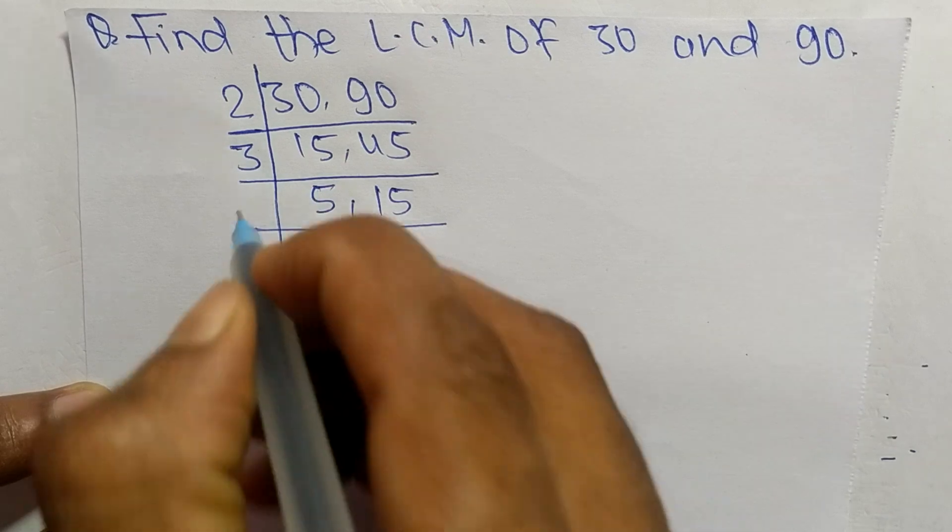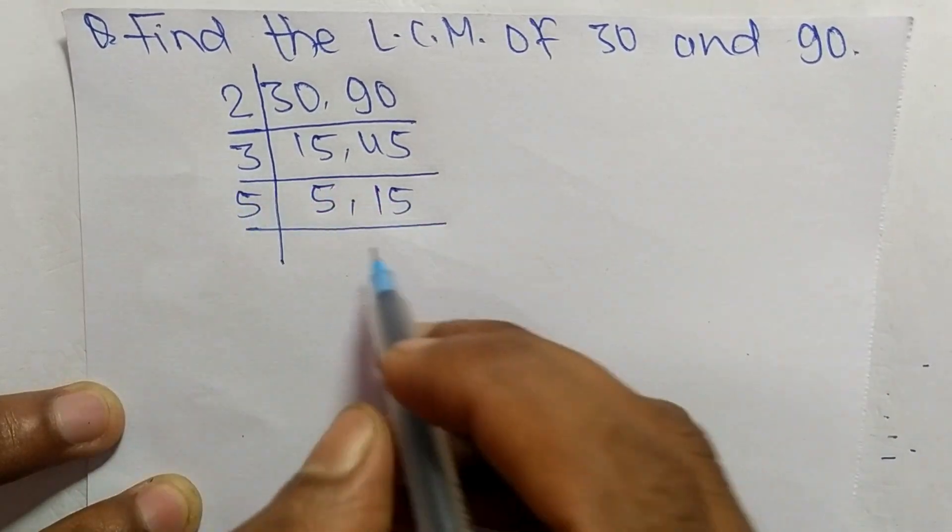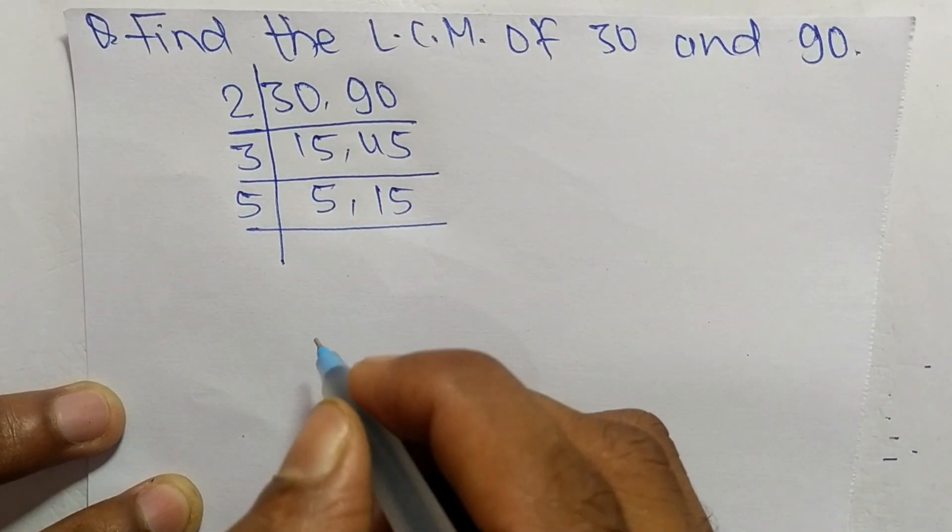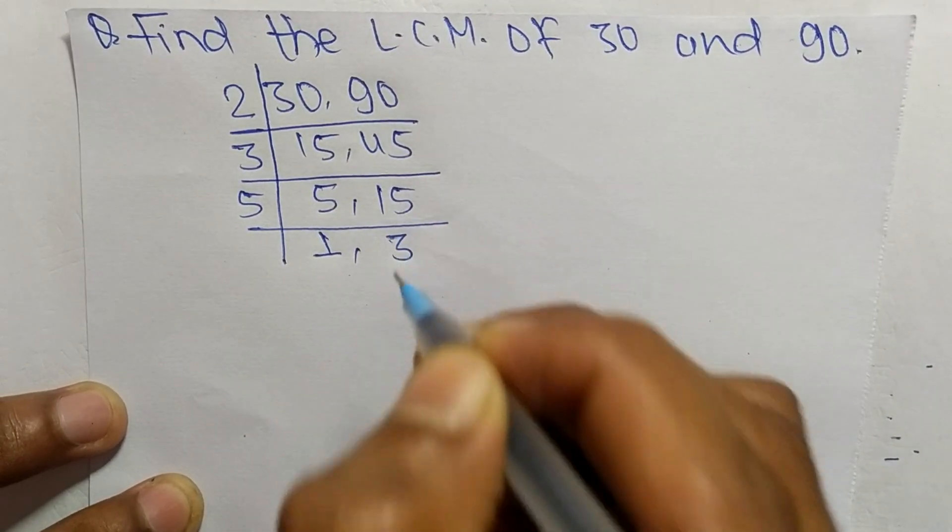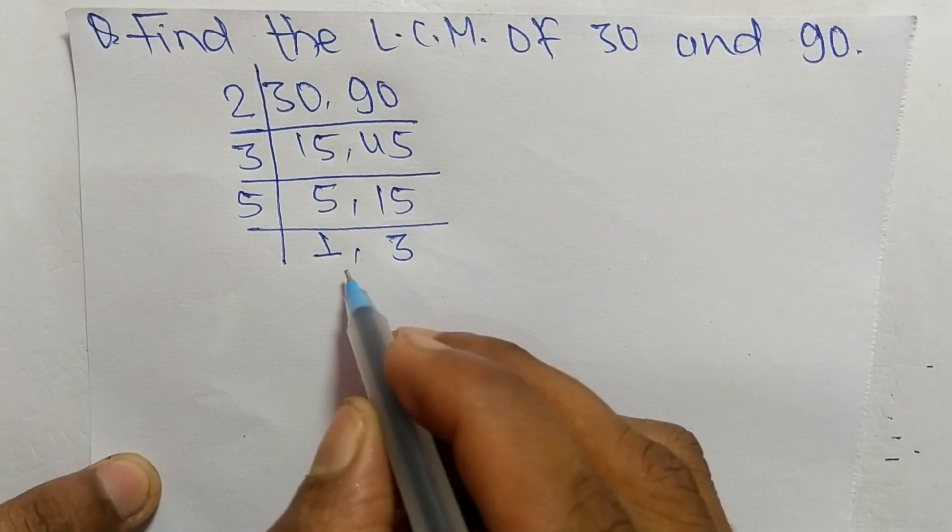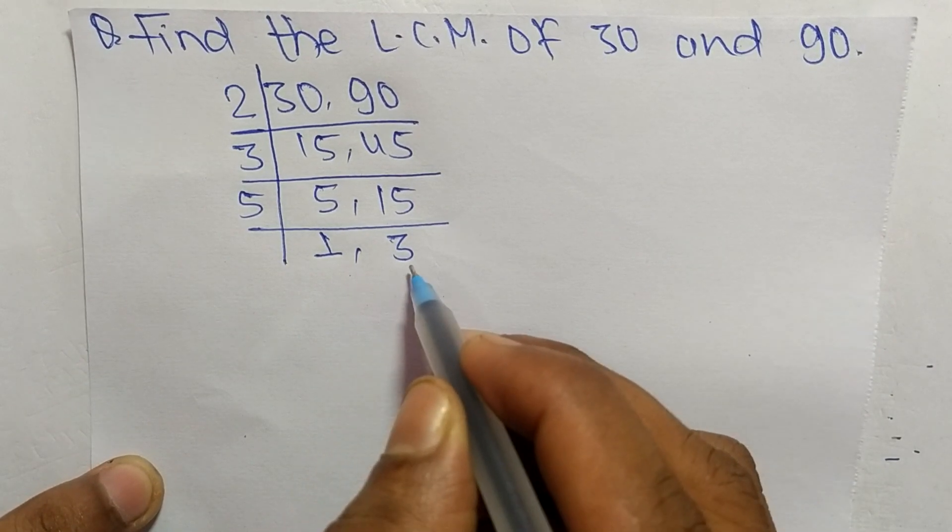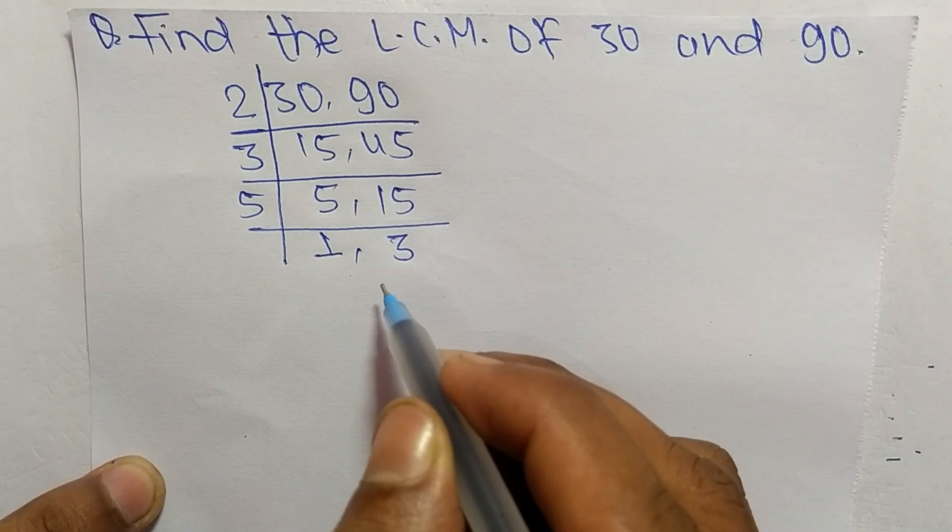The number greater than 3 is 5, which can divide both numbers. So 5 times 1 means 5, and 5 times 3 means 15. At last, we have 1 and 3, which are not exactly divisible by the same number.